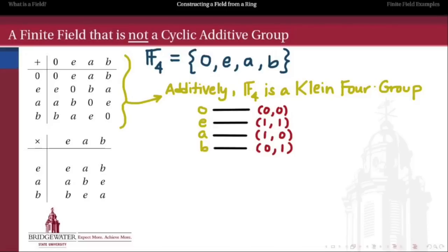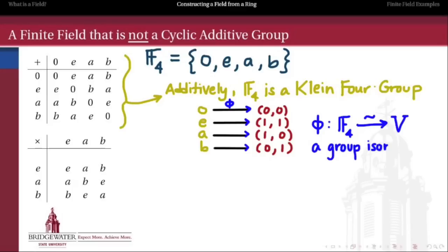To really demonstrate that, we can set up an isomorphism between F4 — which is what I'm going to call this — and the Klein 4 group itself, which is made up of Z mod 2 crossed with Z mod 2. This isomorphism sends 0 to (0,0), E to (1,1), and then A and B are sent to the (1,0) and (0,1) elements. This correspondence is a homomorphism from F4 to the Klein 4 group, and because it's one-to-one and onto, that makes it a group isomorphism. So as groups, F4 is isomorphic to the Klein 4 group.